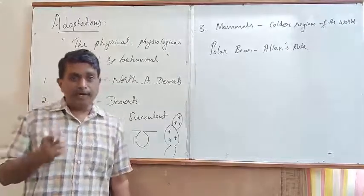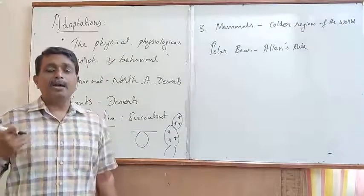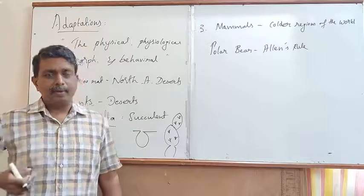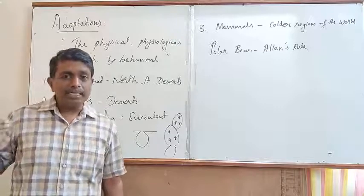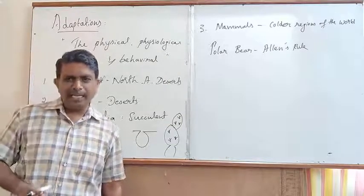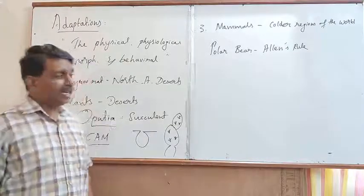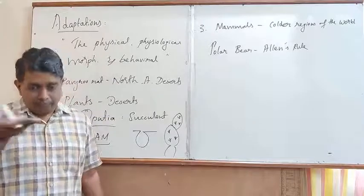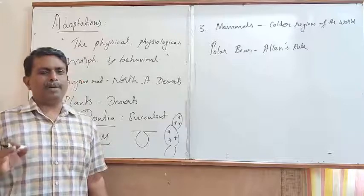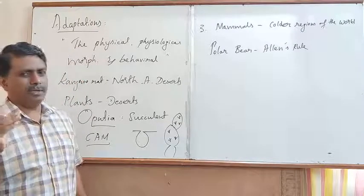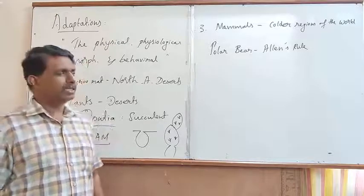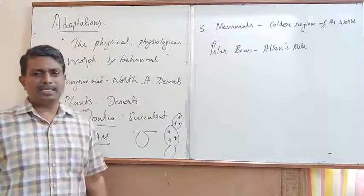In addition to this, you can find the presence of polar seals in the polar seas. In the case of polar seals, you can find the presence of a fatty layer called blubber. With the blubber, it maintains the body temperature. The blubber acts as an insulator, so even in cold climatic conditions, you can find the presence of seals and polar bear population in the colder regions of the world.